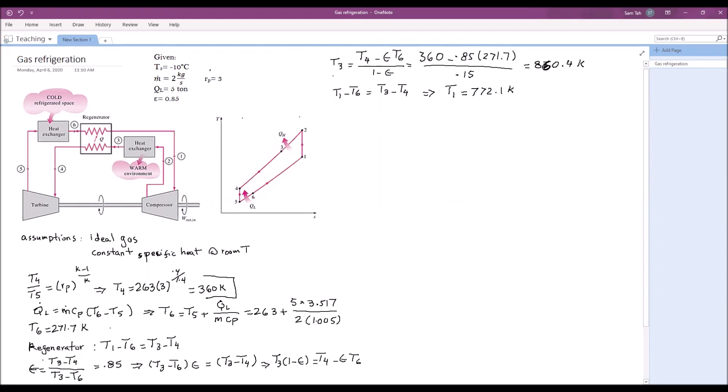So in the next step, the next step is the isentropic equation in the compressor. T2 over T1 is equal to Rp to the k minus 1 over k. And that gives us T2 as 772.1 times 3 to the power 0.4 over 1.4. And the answer is 1056.8 Kelvin.